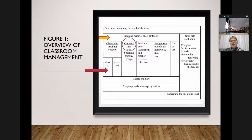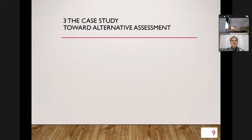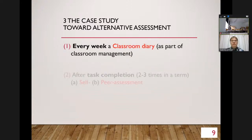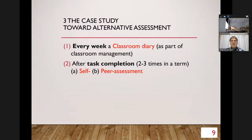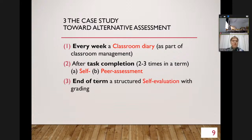Then I think about can-do tasks — what the student should be able to use the language for, maybe three or four tasks in a term. Then I implement the classroom diary every week as part of the classroom. After the tasks, students can do self or peer assessment. Finally, the final examination combines all these tools. So every week the classroom diary is part of classroom management; after task completion there is self and peer assessment; and at the end of term, final self-evaluation and grading.